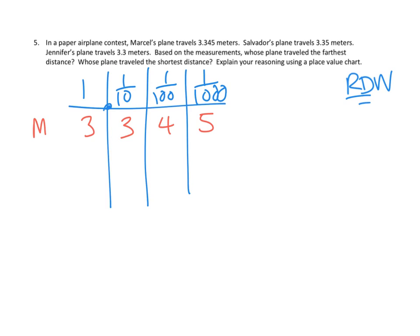Let's pick a new color. I'll pick green for Salvador. Salvador's plane. Salvador's plane travels 3.35 meters. Okay. 3.35 meters. And finally, there's Jennifer. So, we've got to switch to another color. Jennifer. Jennifer's plane travels, let's see. Jennifer's plane travels 3.3 meters. 3.3 meters. Okay.